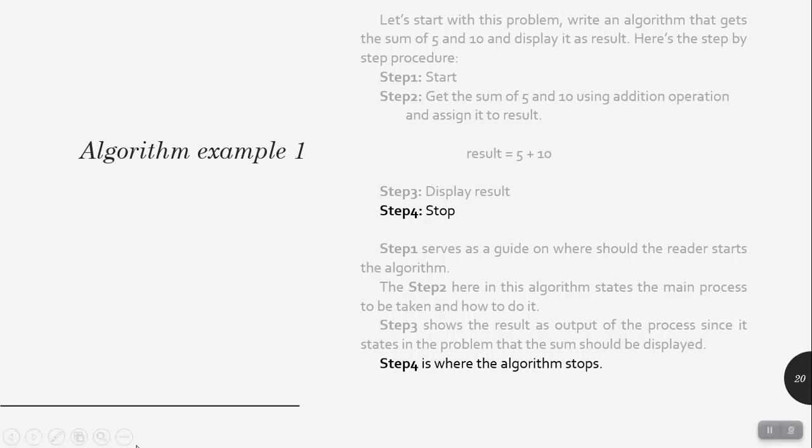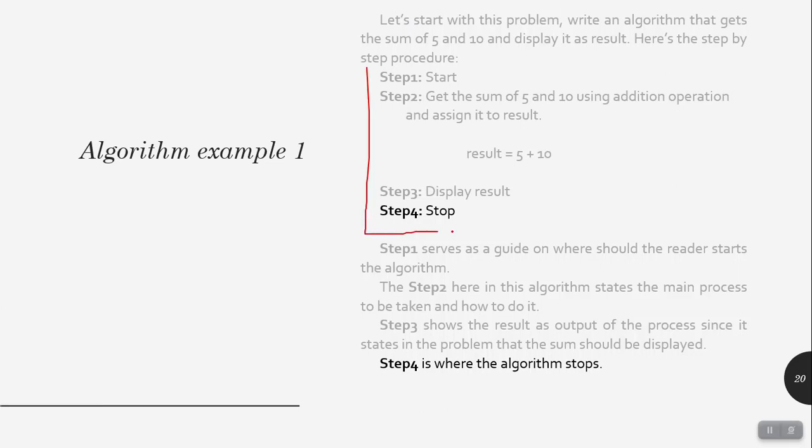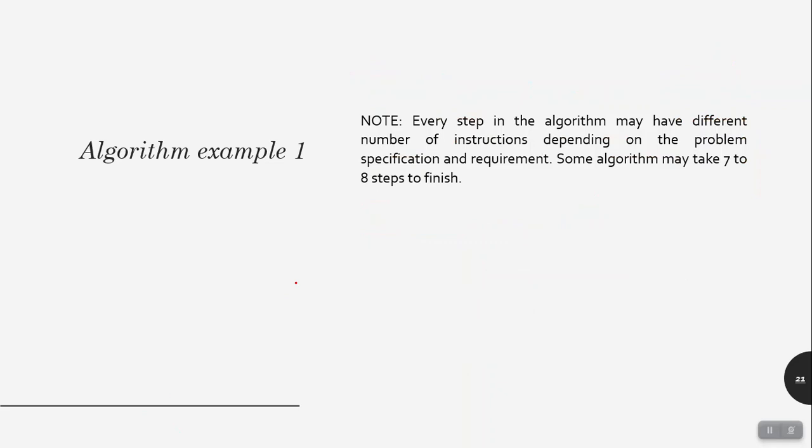This is the answer for our first algorithm — an example of an algorithm. Note: in every step in the algorithm there may be a different number of instructions, depending on the problem specification and requirement. Some algorithms may take 7 to 8 steps to finish. In our first example, the algorithm can only add 5 and 10 as specified. But what if the problem requires an algorithm that can accept input instead of just 5 and 10?